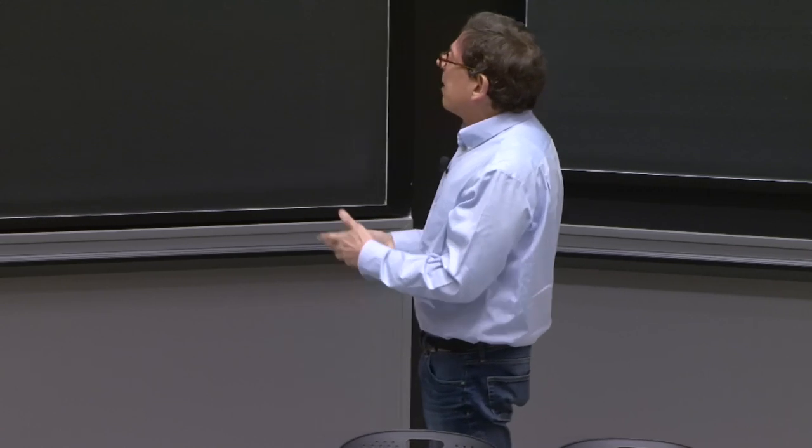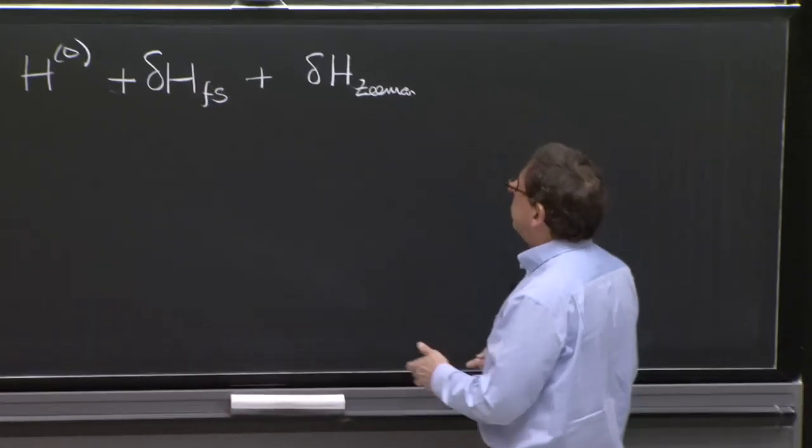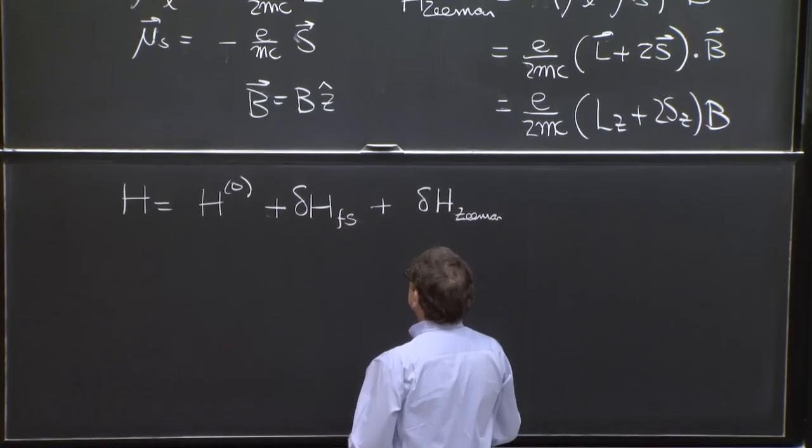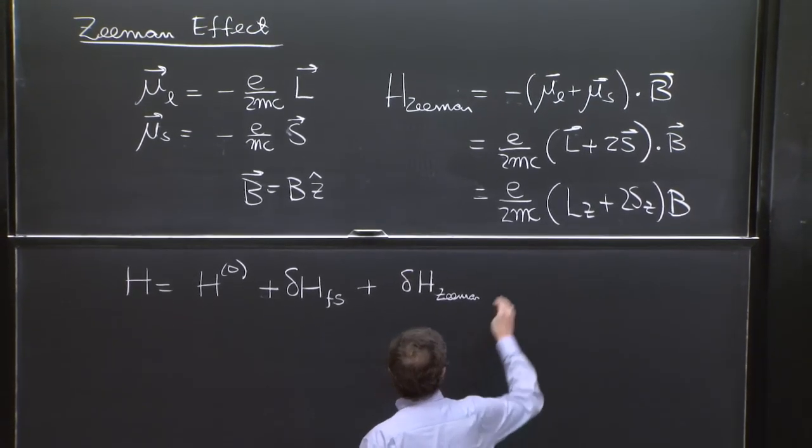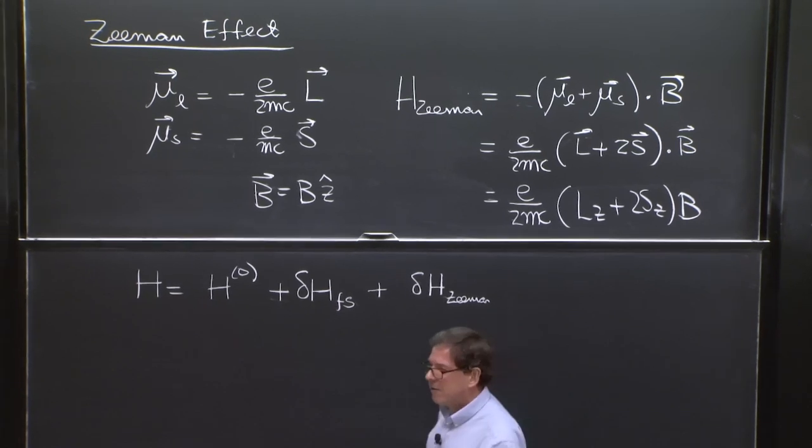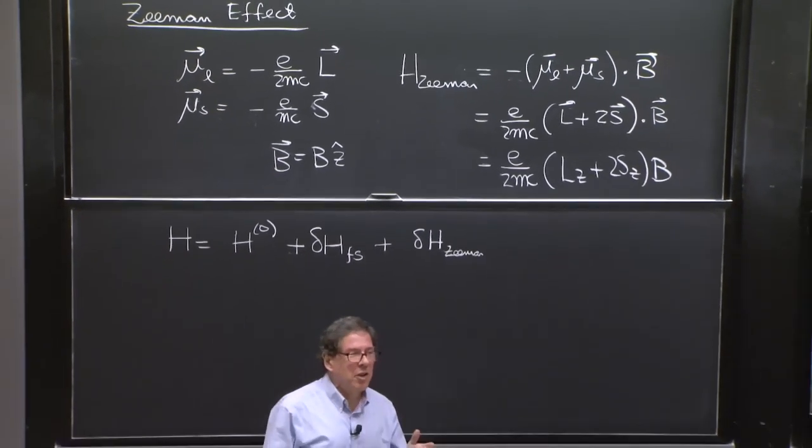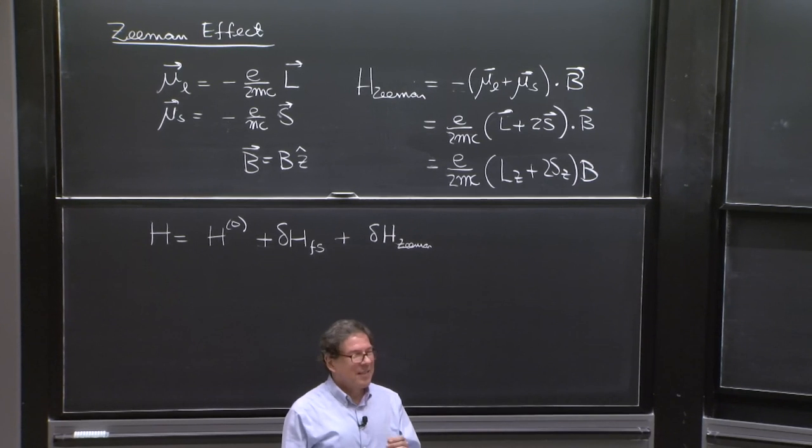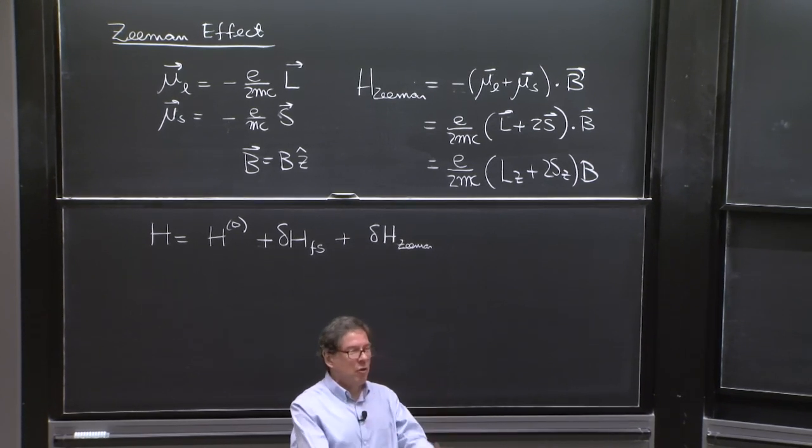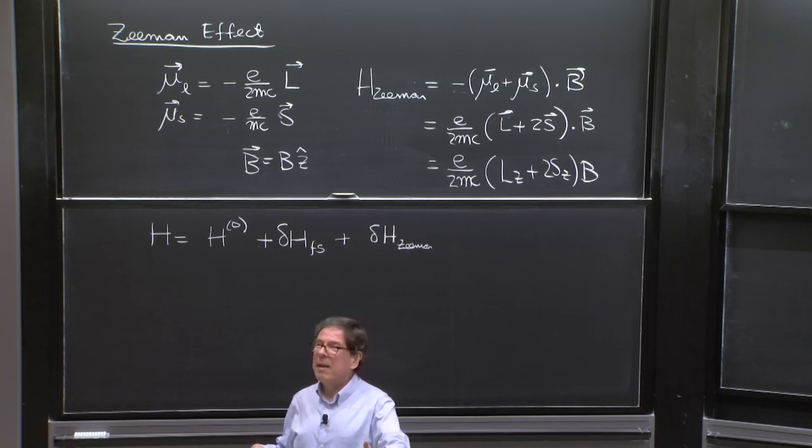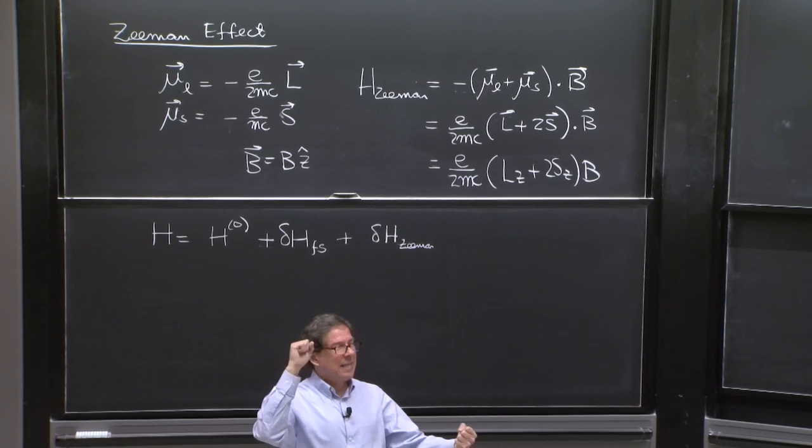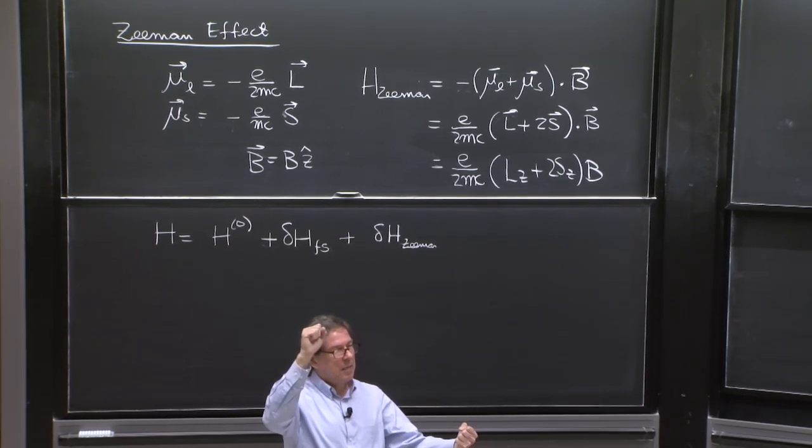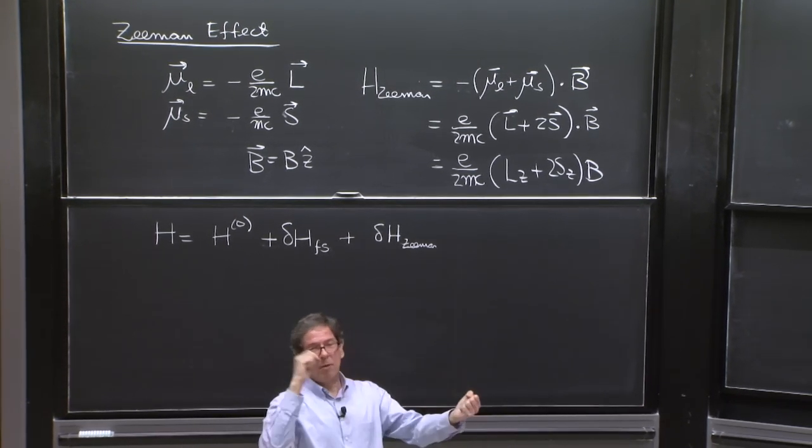So how can we decide how to treat these terms? Well, we should look physically at what's happening. We have a magnetic field, an external magnetic field. But the fine structure constant taught you that there is something like an internal magnetic field in the atom. It's that magnetic field responsible for spin orbit coupling. It's that magnetic field that the electron sees when it's going around the proton.